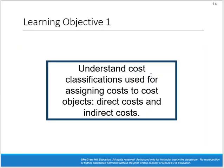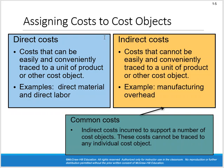We're going to start by understanding cost classifications used for assigning costs to cost objects. First, direct cost versus indirect cost. A direct cost is one that can be easily and conveniently traced to a unit of product or another cost object. In a manufacturing setting, the direct material that goes into making each unit of product and the direct labor that goes into each unit of product are examples. So direct costs include direct material and direct labor.